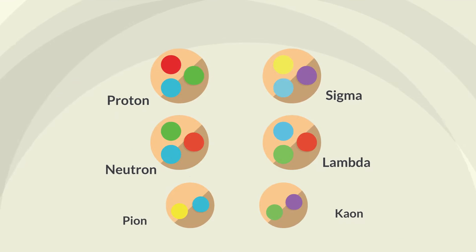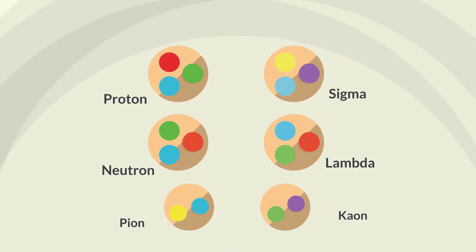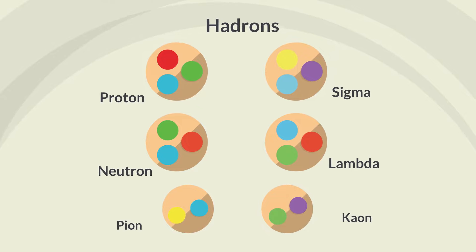The larger particles composed of quarks and gluons, such as protons and neutrons, are known as hadrons.